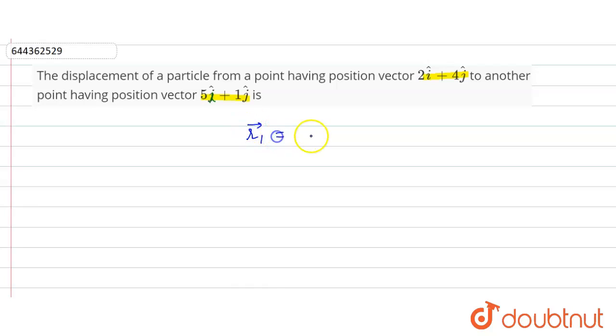So here, let's assume position of first, r1 vector is equal to 2i cap plus 4j cap, and r2 vector is equal to 5i cap plus 1j cap.